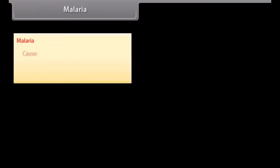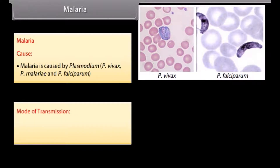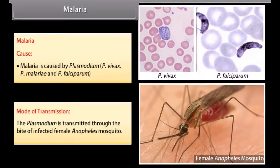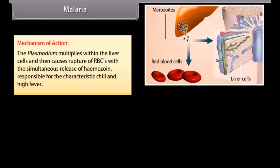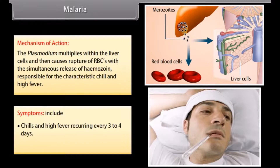Malaria is caused by Plasmodium — P. vivax, P. malariae, and P. falciparum. It is transmitted through the bite of an infected female Anopheles mosquito. The plasmodium multiplies within the liver cells and then causes rupture of RBCs, with simultaneous release of hemozoin, responsible for the characteristic chills and high fever. Symptoms include chills and high fever recurring every 3 to 4 days, and fatigue.